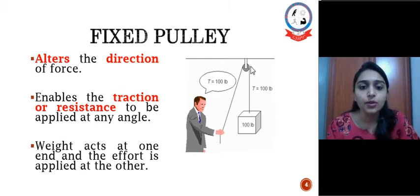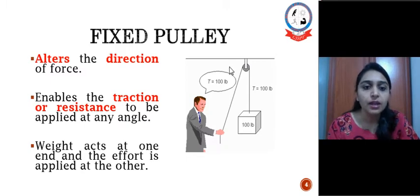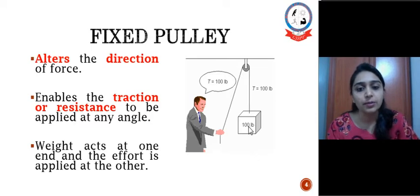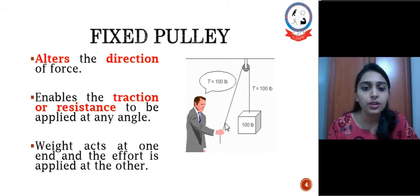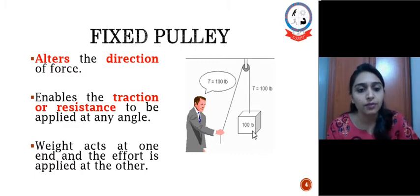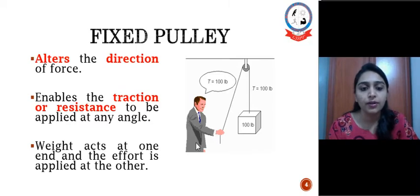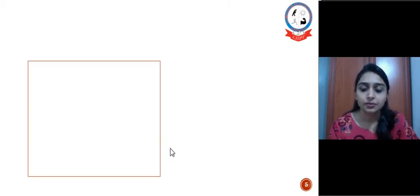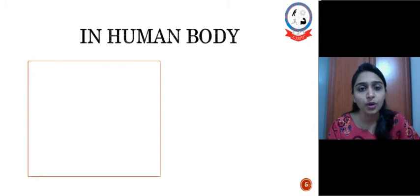While with the use of pulley what we can do is we can alter the direction of force as we are giving force in the downward direction towards the gravity to lift this 100 lb weight. Same 100 lb tension is being generated in the rope so we also need to apply effort of 100 lb force. So here we can see a pulley on one end there is a weight and another end effort is being applied.